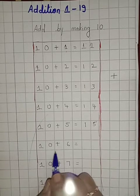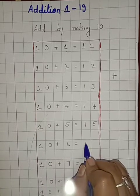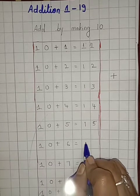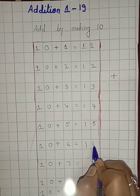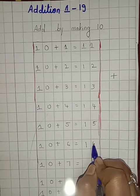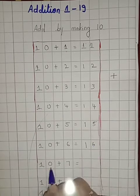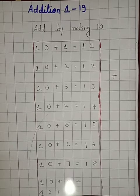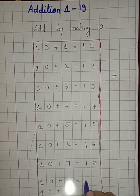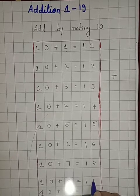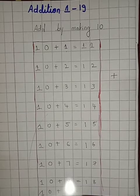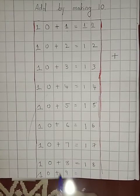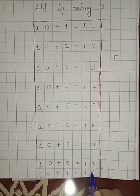Like that way only, 10 plus 6 is 16. 10 plus 7 is 17. 10 plus 8 is 18. Isn't it, children? 10 plus 9 is 19.